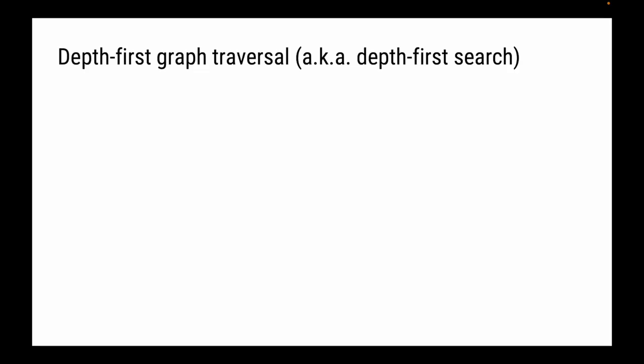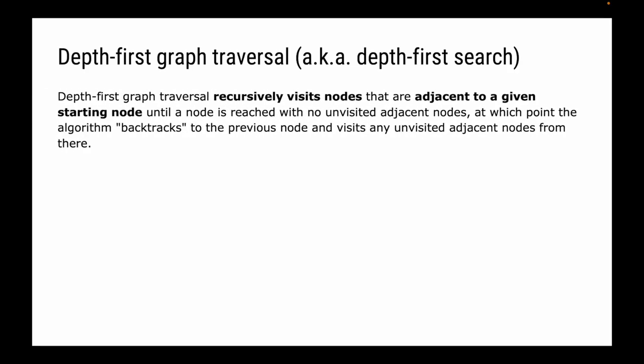Depth-first traversal, sometimes called depth-first search, recursively visits nodes adjacent to a given starting node until a node is reached that has no unvisited adjacent nodes. At that point, the algorithm backtracks to the previous node and visits any unvisited nodes from there. It uses a stack to facilitate this backtracking.